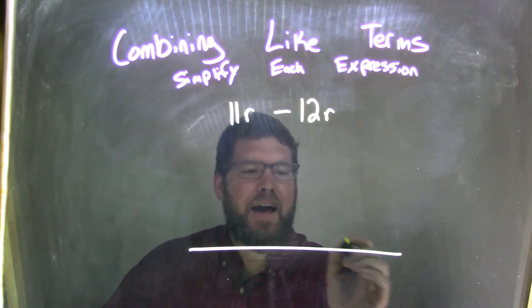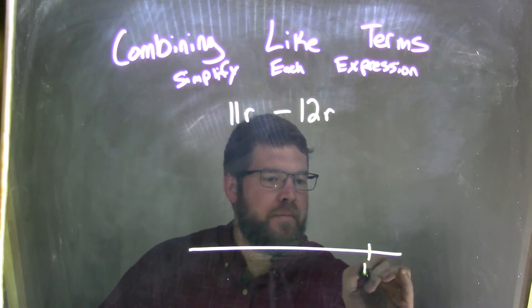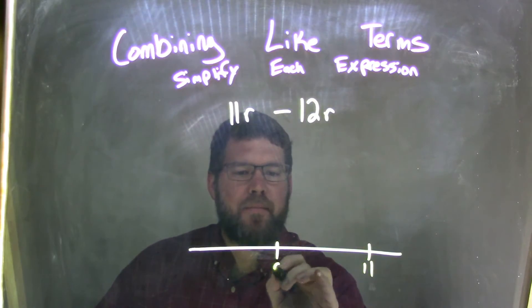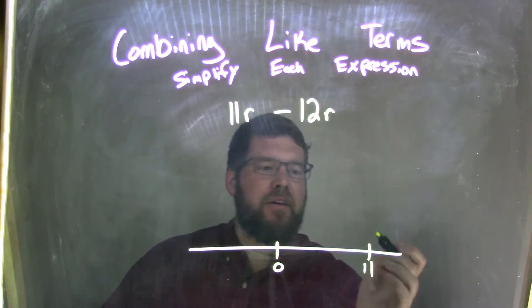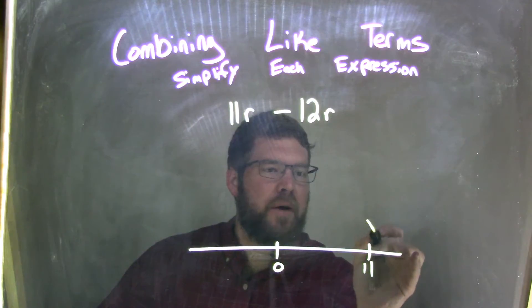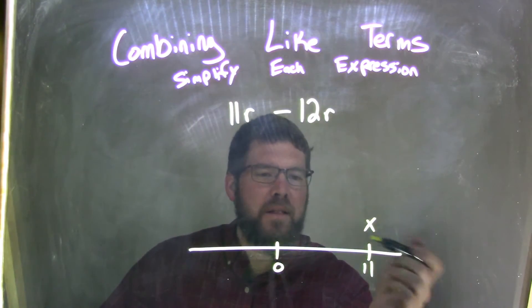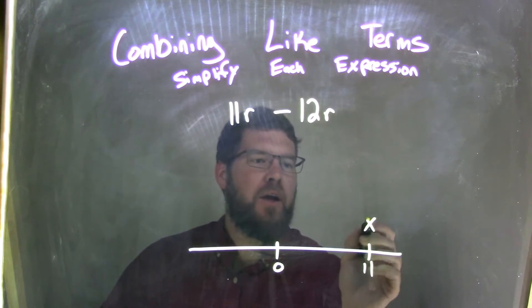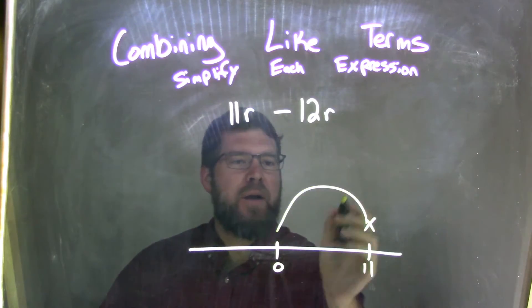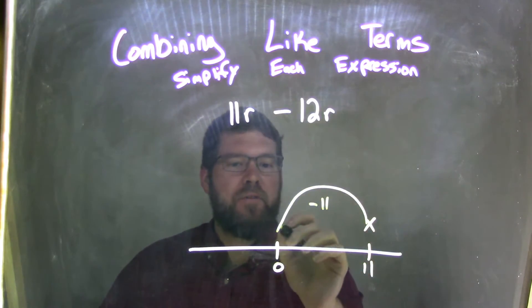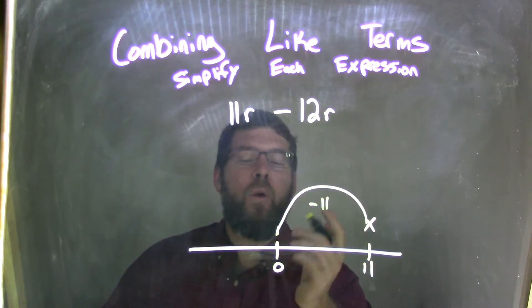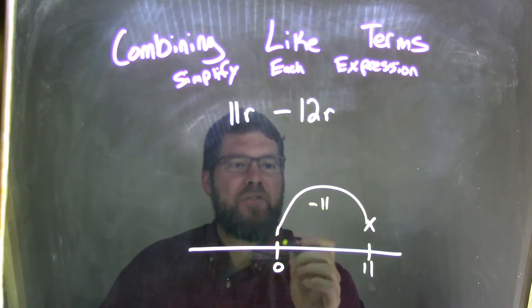So, if I had a positive 11 here, and this is a 0, okay? And I start with 11, right? Here's my starting spot, and I move it to the left to subtract 12 units. Well, if I jump all the way to 0, that's minus 11 units, right? Well, I'm one more away to get to minus 12 units, right?